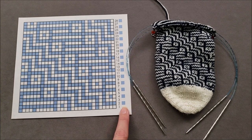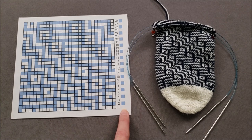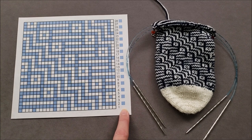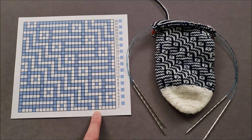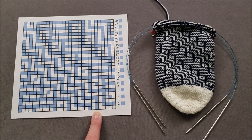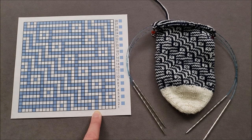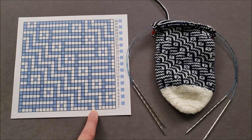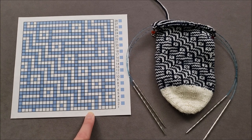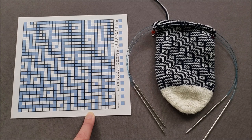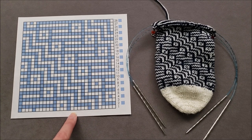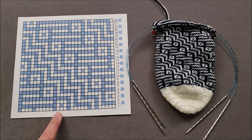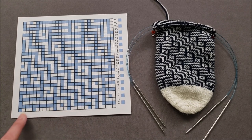So for example, for round one, you would work the entire round in white, knit the first five stitches, and then since this square is not in white, you would slip the stitch, knit a stitch, and then again, since this square is not white, you would slip the stitch, knit five, slip a stitch, knit three, slip a stitch, and so on.